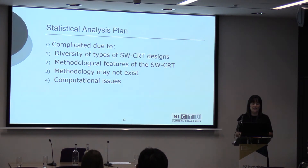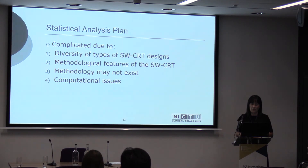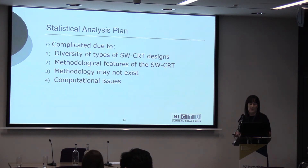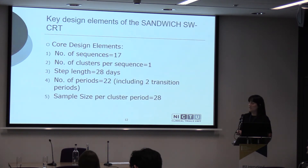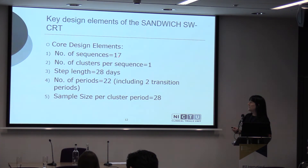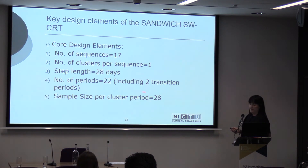There are several methodological features to consider: methodology may not even exist at the start of a trial but may be published during the trial period; and there are computational issues with the models and the software needed to handle them. For the SANDWICH trial's core design elements: 17 sequences, one cluster per sequence, step length of 28 days, 22 periods including two transition periods — so only 20 periods of actual data collection — and 28 patients per cluster per period.